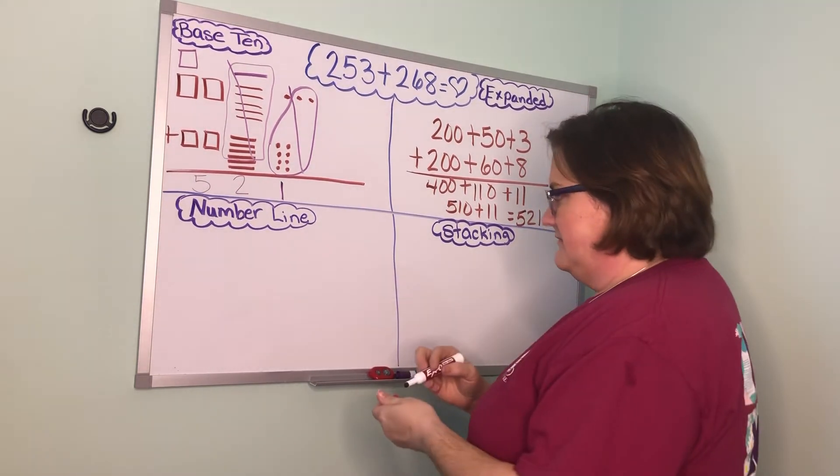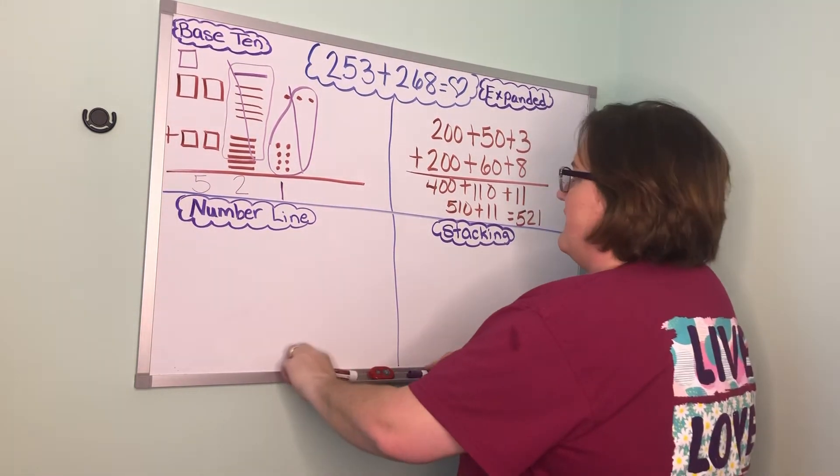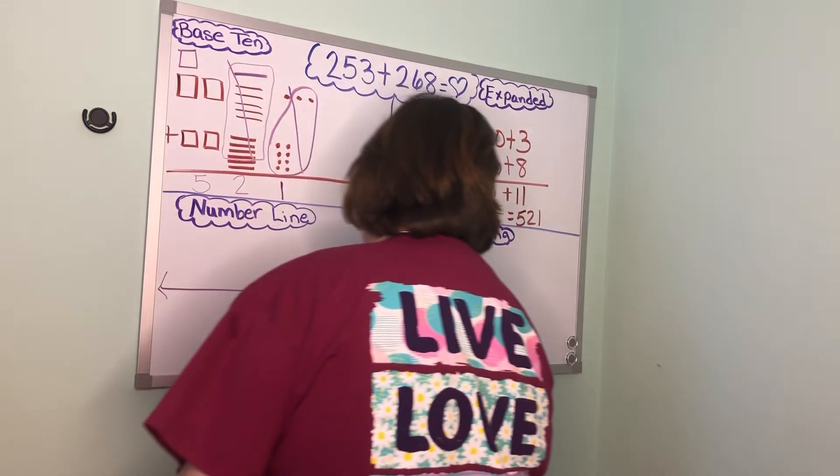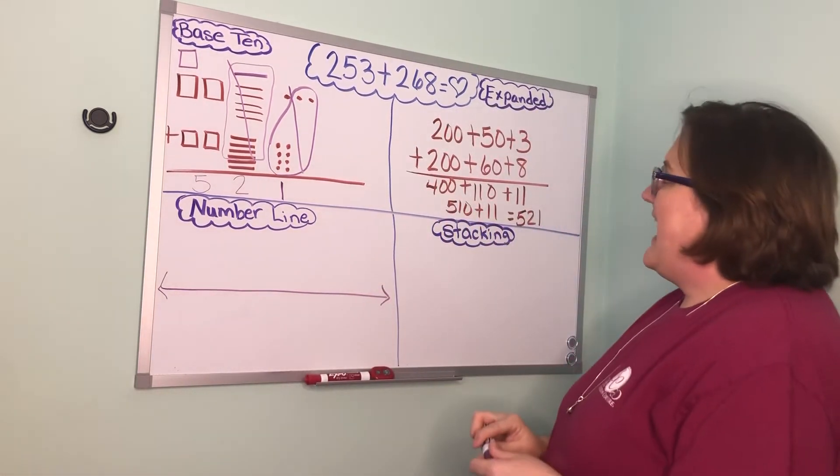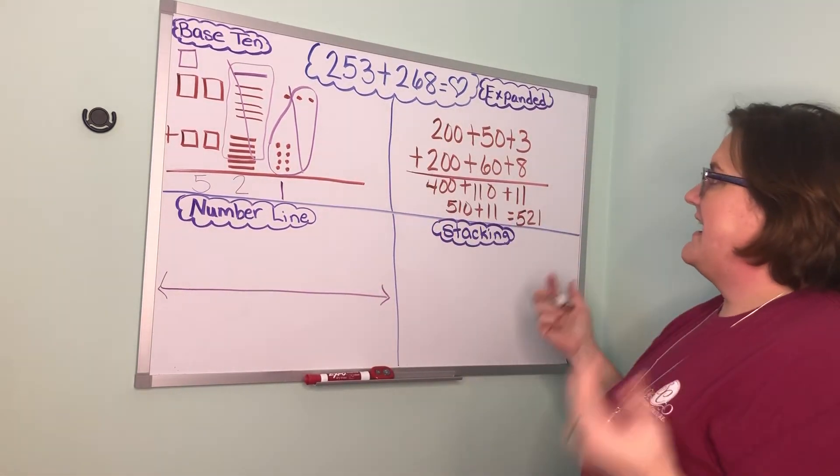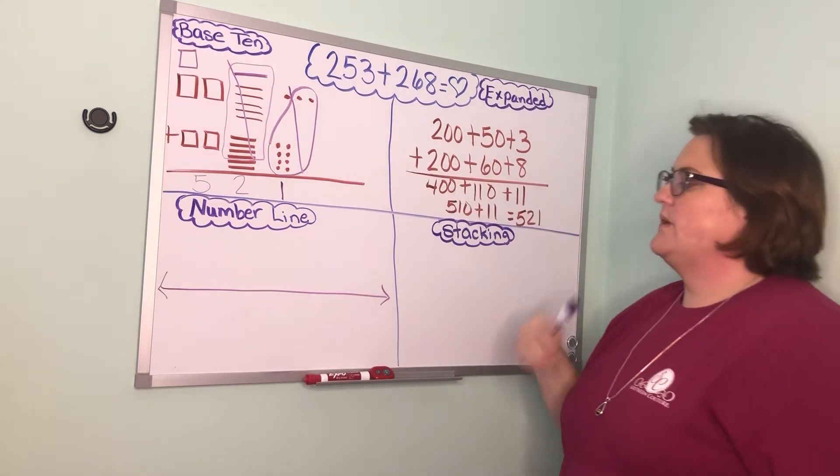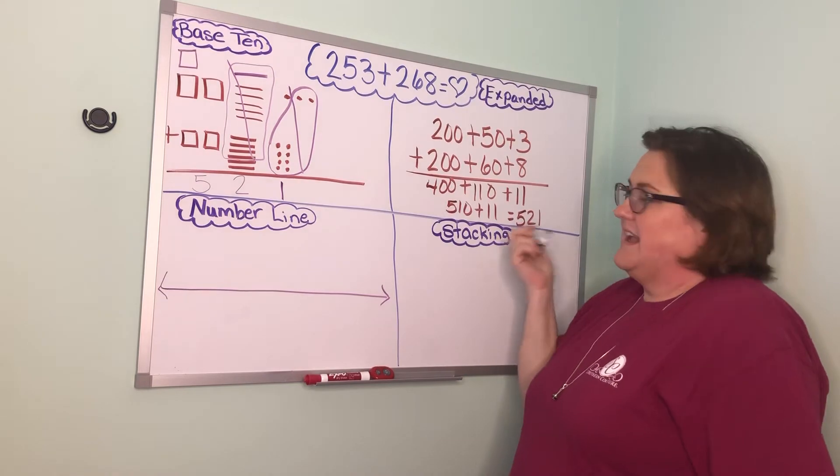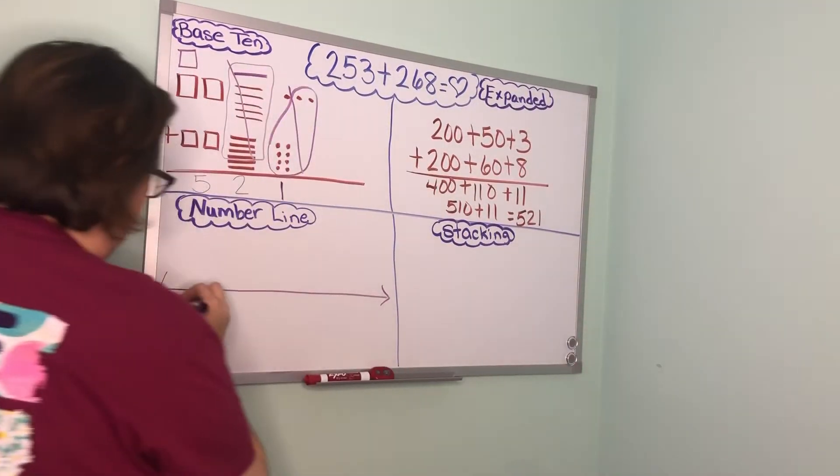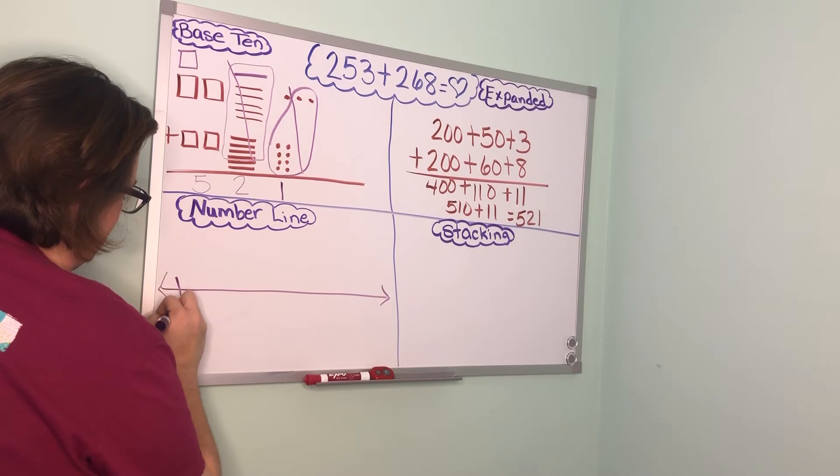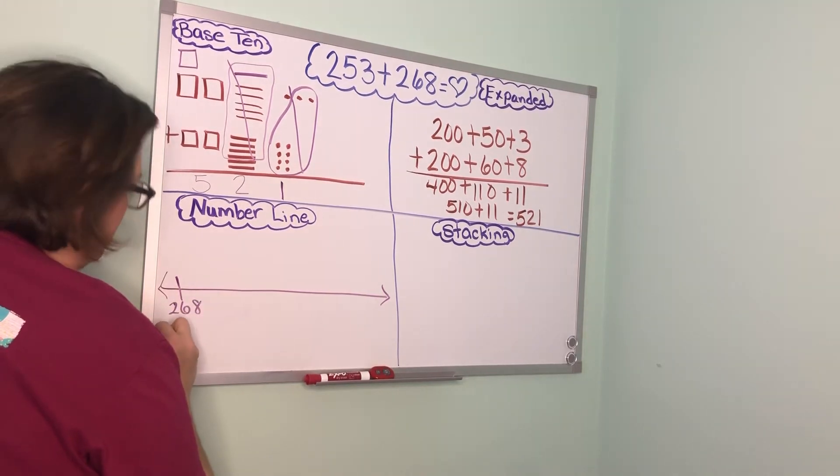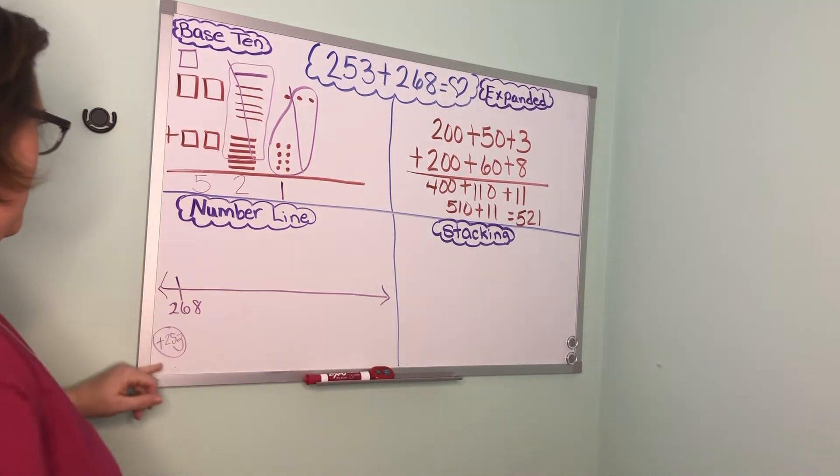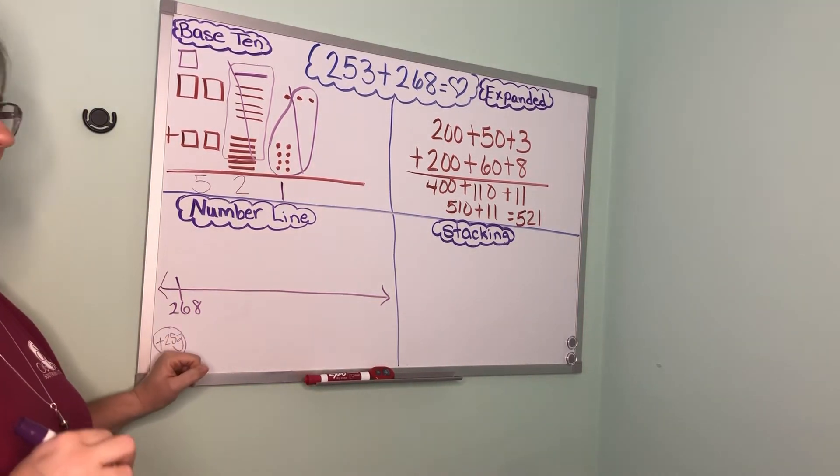Number line. For our number line we are going to draw the number line. Now we are adding so I'm going to start at a side. Remember when we are adding it doesn't matter which addend we put first. I can start with 268 since that's the bigger number. So I'm going to put 268 right here and then down here I'm going to put a little plus 253 to remind myself that that's how much I have to add.